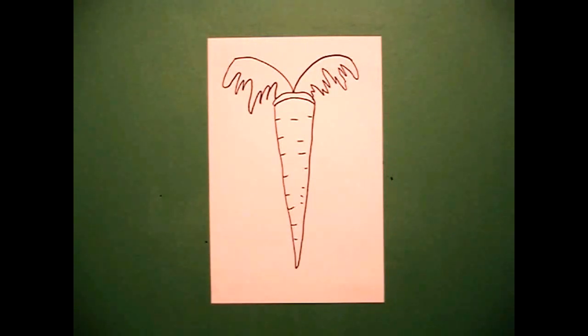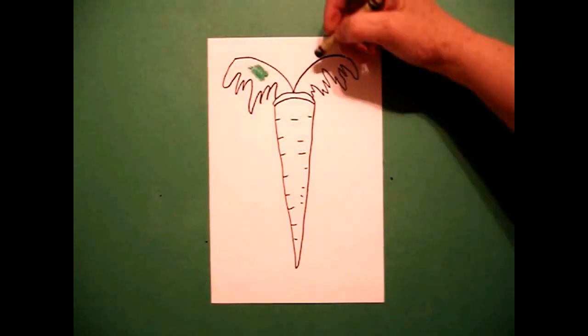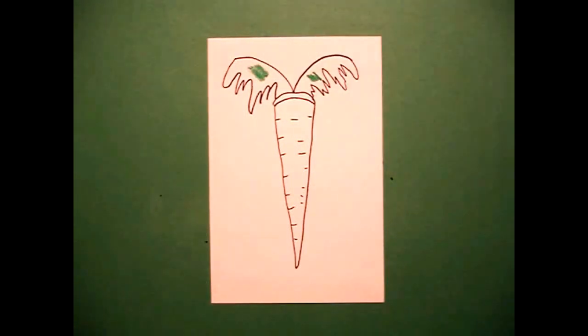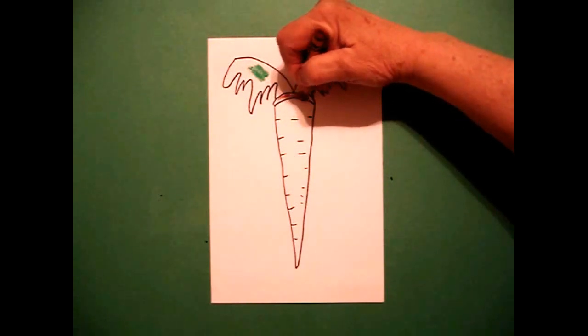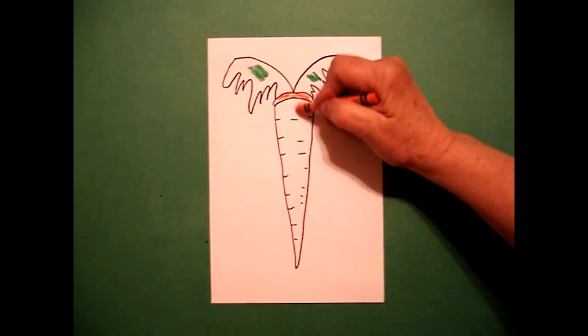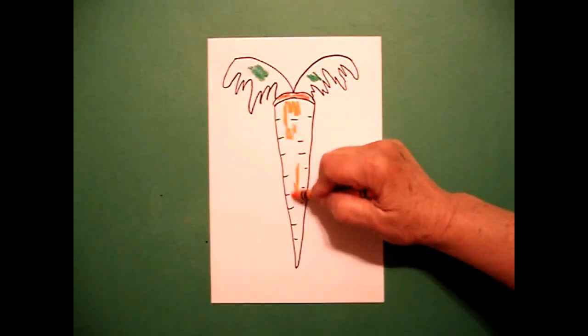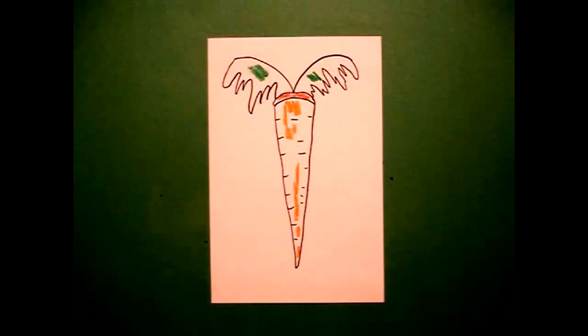Alright, the colors of my carrot I really want to pop so I use a dark, dark green on my leaves. I use a brown up here at the top and then I use a really bright orange. Color it all the way down to the tip. That's all.